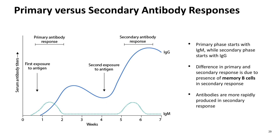You can see that in secondary exposure to the antigen, you have a higher base level of IgGs, and the amount of antibody generated over a shorter period of time is much higher. Notice that the IgMs are fairly consistent in quantity; however, they are produced earlier in that phase.